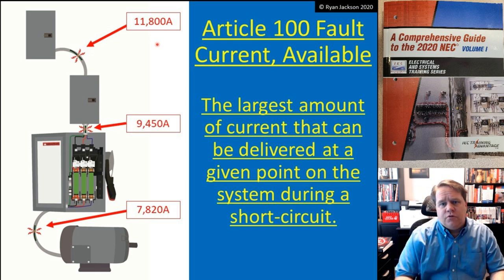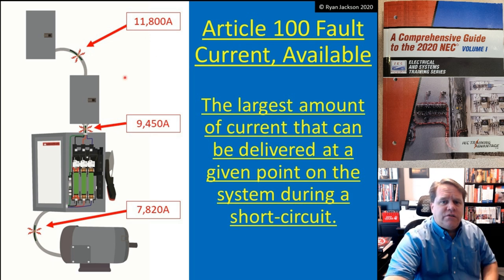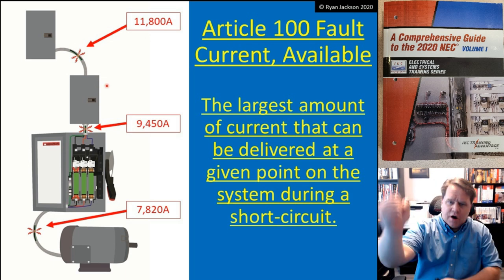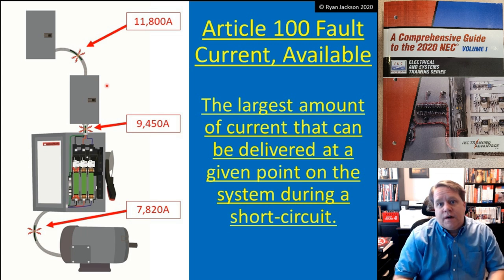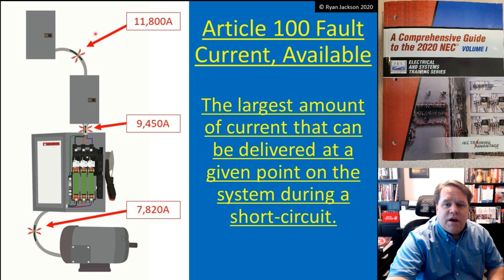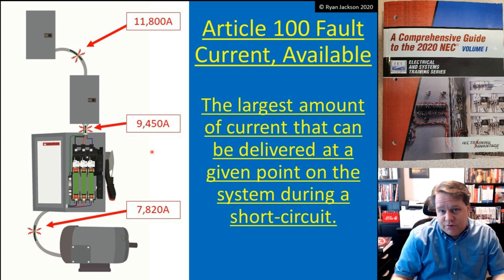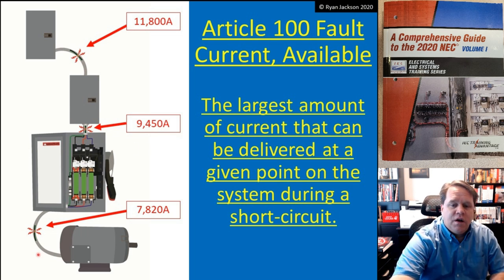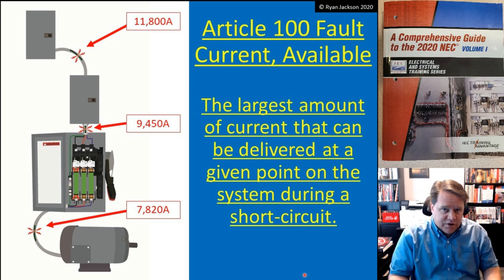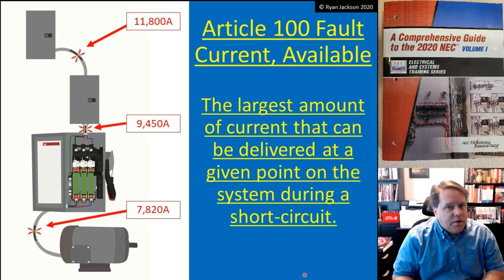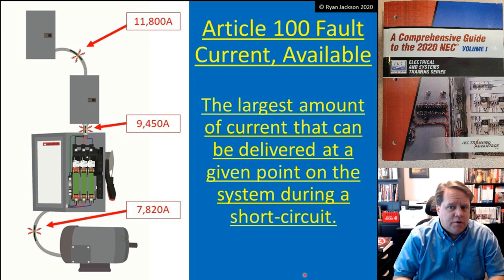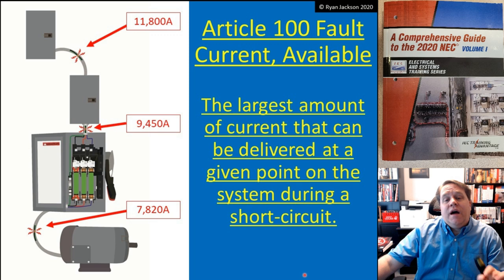How much current would flow at a given location is going to be a function of that location. In this conduit here, if I were to take a saw and cut through it, how much current would flow during that fault? At that point on the wiring system, we're going to say 11,800 amps. As I go a little farther away from the source, maybe it's 9,450 amps. And then as I get even farther from the source, that number goes down to maybe 7,800 amps. The available fault current is different at all points of the wiring system, and it's absolutely imperative that I know what it is. At a minimum, we know we have to mark it on some equipment.